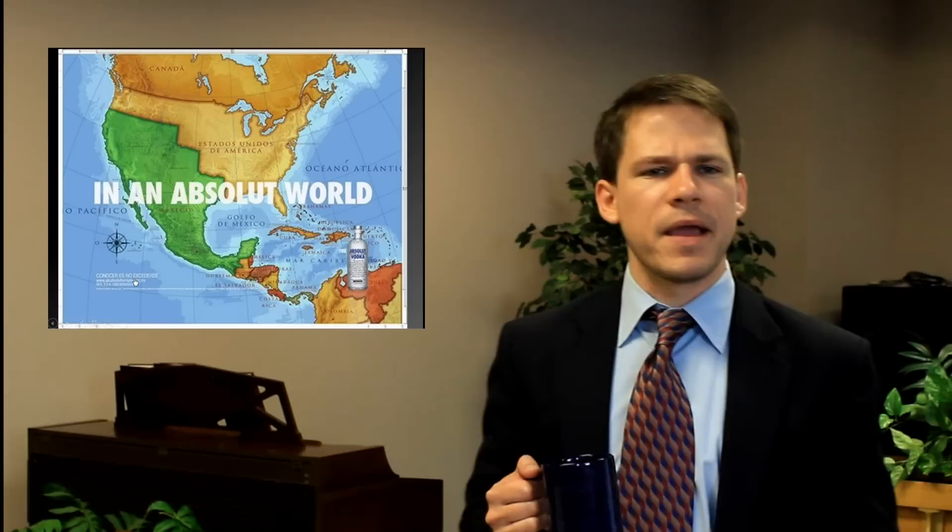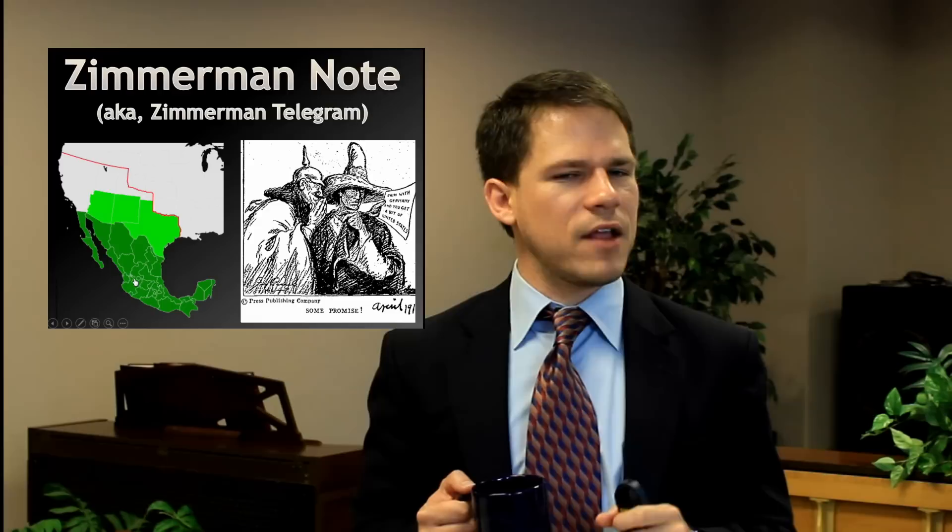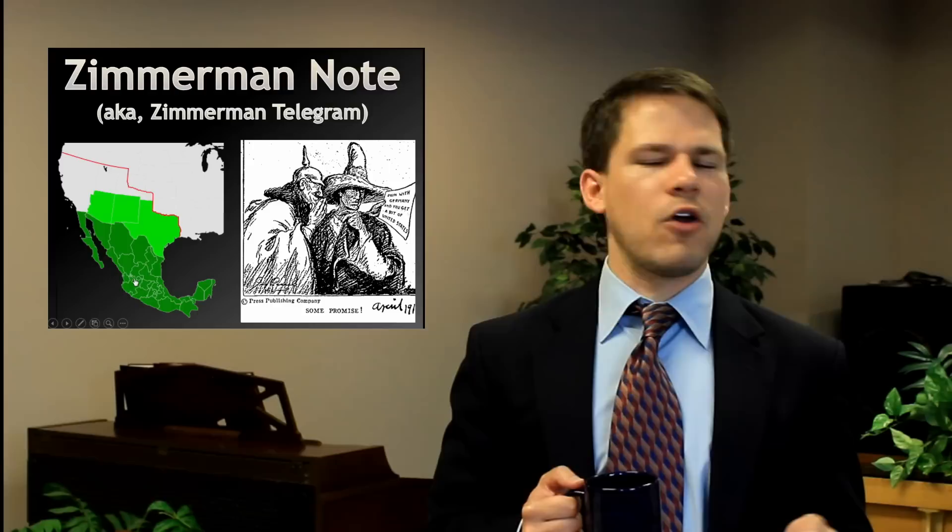Remember that the Mexicans were still a little bit irked that we took half their country, and the Germans knew that. The Germans got in touch with Mexico in the form of the Zimmermann note - the so-called Zimmermann telegram. The Germans said: Mexico, if you'll go to war with the United States when the United States gets involved in a war with us and attack the United States, we will give you Texas, New Mexico, and Arizona. I don't know how they planned to deliver on that - it's really kind of laughable.